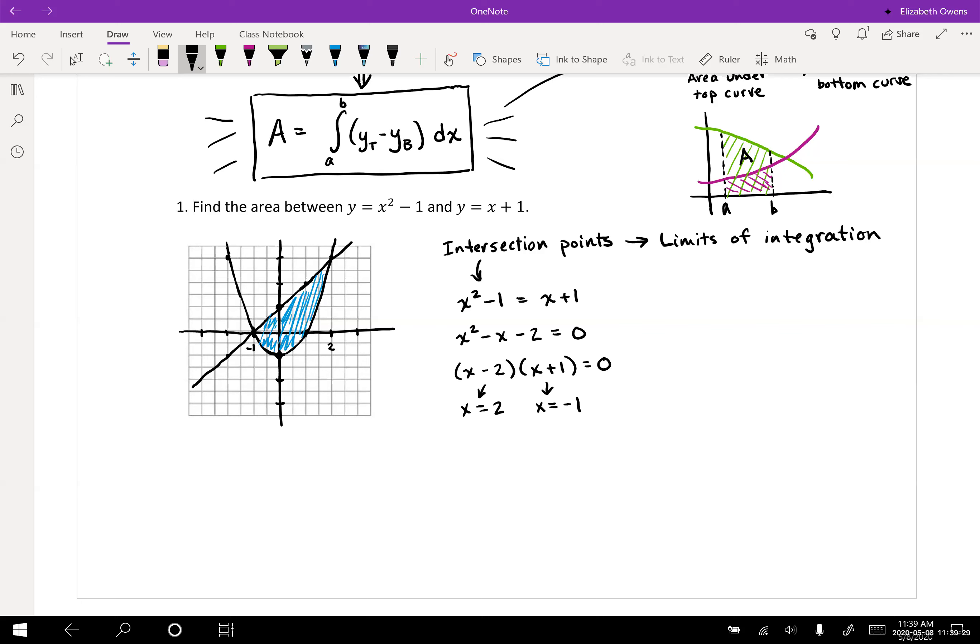You can see our area formula that we derived in the last video right here. We're going to integrate from a to b and then you take the top function minus the bottom function and then integrate with respect to x.